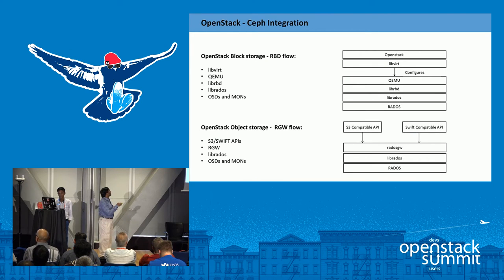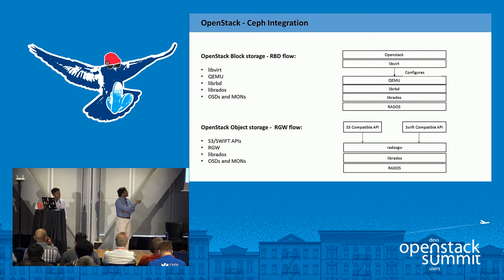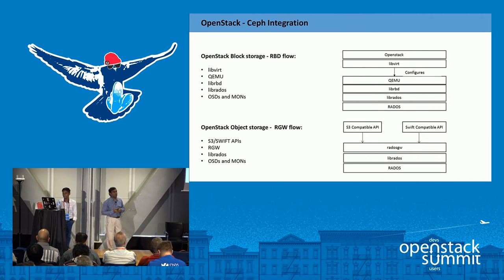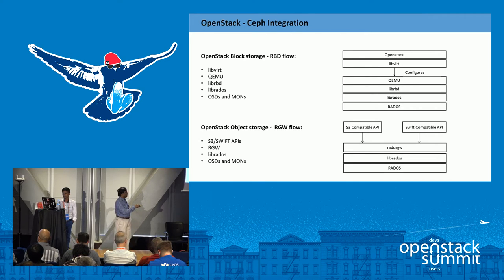Here is a typical flow for block storage and object storage. For block storage, OpenStack Nova talks to LibVirt. LibVirt configuration says how to talk to RBD. It goes to QEMU, then through LibRBD and LibRados — this is the lower layer where the OSDs are available. For object storage, it depends on S3-compatible and Swift-compatible APIs. The user request comes in, goes to the Rados Gateway client, which is built on LibRados, and LibRados internally goes to the Rados storage. This is the typical flow for both storage types.